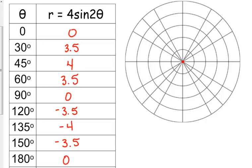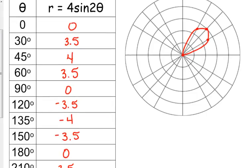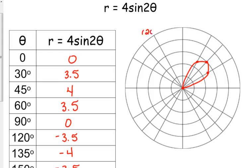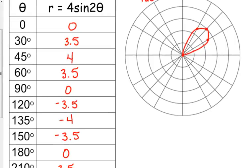So zero, zero, 30 is 3.5, 45 is 4, 3.5 and zero. So we get this kind of loop or petal-looking thing here. 120 is this angle right here, but it has a negative radius, so that shoots us through to the other side. Same thing, another negative radius, another negative radius.